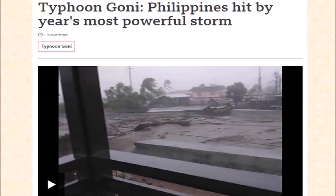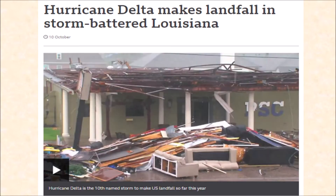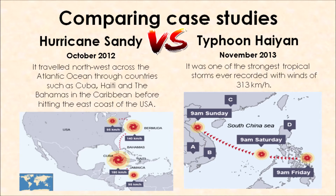As geography students, you will need to understand what we call case study knowledge — location examples and specific facts and figures linked to specific examples of low pressure weather systems. For example, some of you might have studied Hurricane Sandy, which occurred in October 2012 and affected countries within the Caribbean Sea as well as the United States of America. Alternatively, you may have studied Typhoon Haiyan, which occurred in November 2013 and is very popular among those studying AQA GCSE geography — it affected the Philippines.